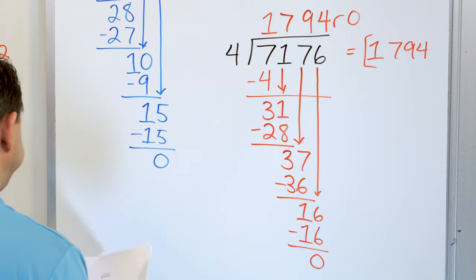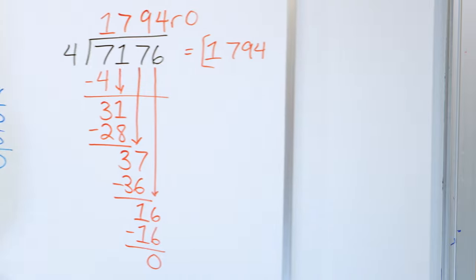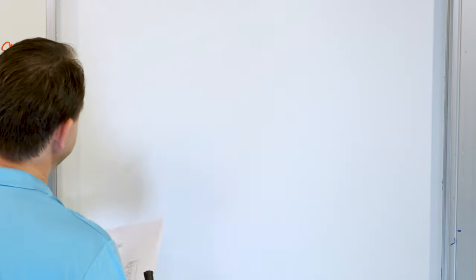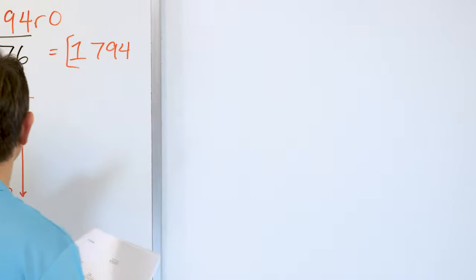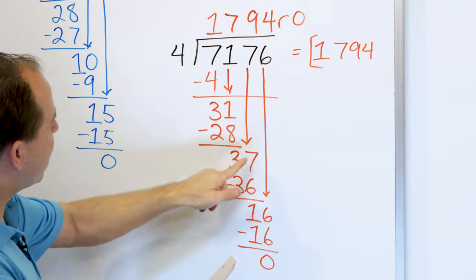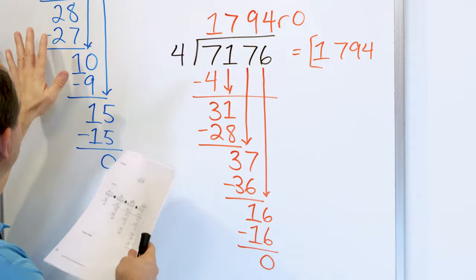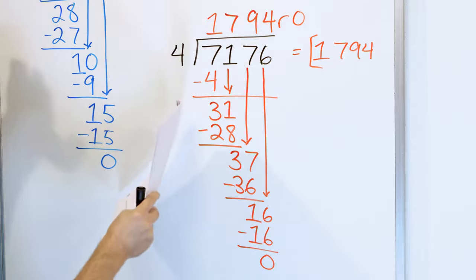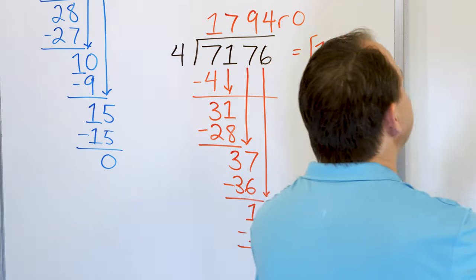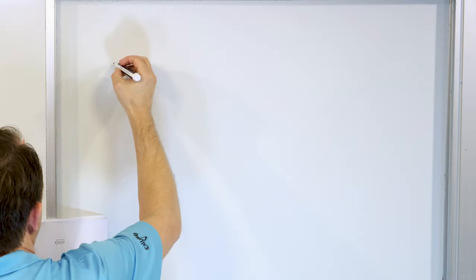The answer is exactly 1,794, with nothing left over, just like in the last problem. We've only done four problems, and these problems take time, so it's very important to set your paper up neatly. Draw your arrows so you know what you're dropping down. If you have everything misaligned, it's very hard to do these.